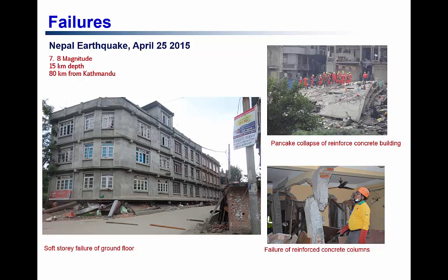The 2015 Nepal earthquake also saw the collapse of many concrete structures. In this figure, at a quick glance the building looks fine, but on closer inspection we can see that the ground floor has completely disappeared. This type of failure is called a soft story failure. It happens because in many countries, columns or walls are removed on the ground floor to open up space for retail shops or garages, making the ground floor weaker than the stiffer upper floors, causing it to collapse when earthquakes hit.